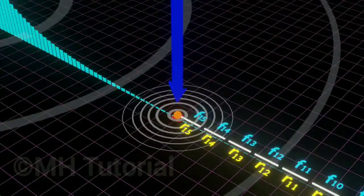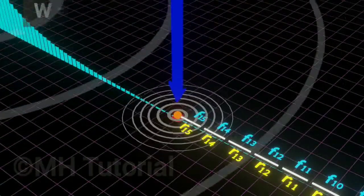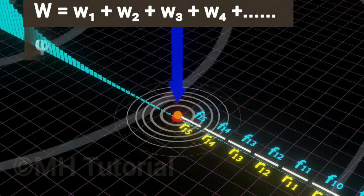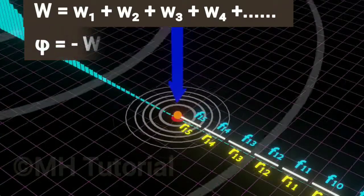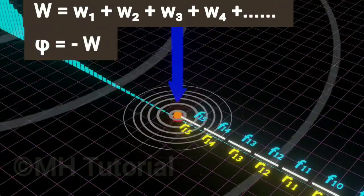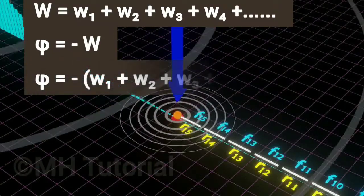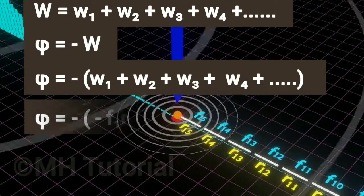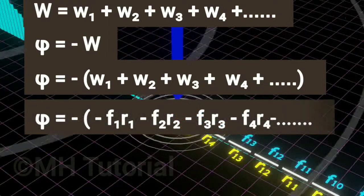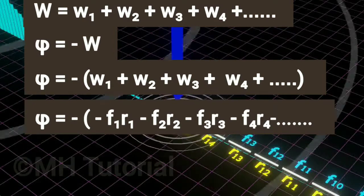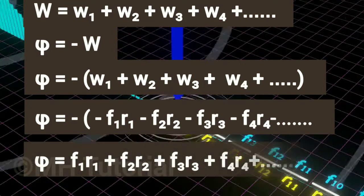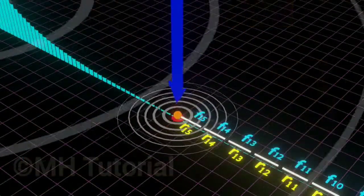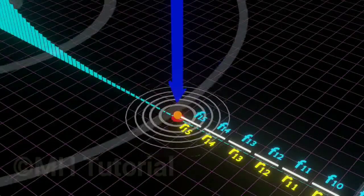Summing up all these small works, we get the total work for this displacement to be W1 plus W2 plus W3 plus W4, etc. Electrical potential φ is defined to be equal to minus the work done. Thus φ equals minus bracket (W1 plus W2 plus W3 plus W4, etc.), which equals plus F1 R1 plus F2 R2 plus F3 R3, and so on. The total of all your mechanical works is called the electrical potential at that red point.